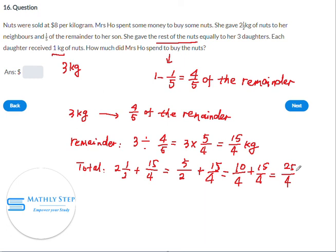So this is the total kilograms of nuts that Mrs. Ho bought at first. The question is asking how much did she spend. She will spend $8 times this amount, which is $50. So the answer is $50.